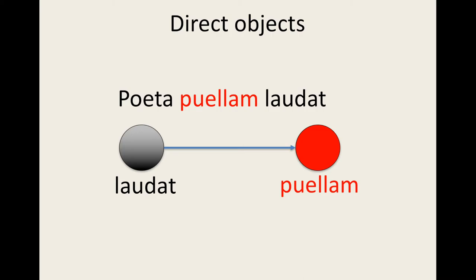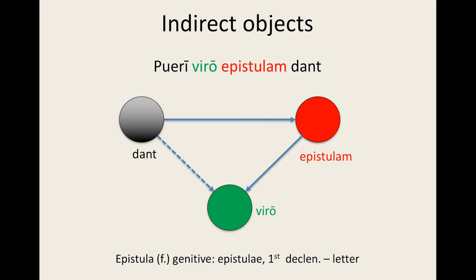Here is an illustration of direct objects. We have the transitive verb represented by a black circle, which is acting on the red circle of the direct object. Poeta puellam laudat — 'The poet praises the girl.' In the case of indirect objects, we have the transitive verb acting on the direct object, and the direct object then acts on the indirect object, so the transitive verb affects the indirect object through the direct object. We have pueri viro epistulam dant — 'The boys give a letter to the man.' The letter is the direct object; the man is the indirect object.